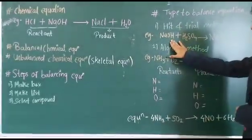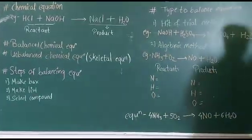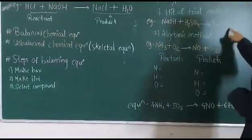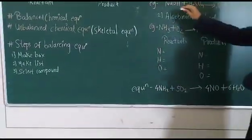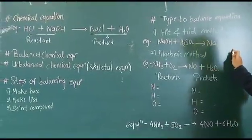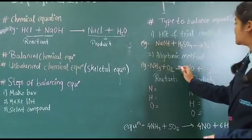First, hit and try method. In this, NaOH plus H2SO4 gives rise to Na2SO4 plus H2O. So we need to balance this equation. This is a skeletal equation, means unbalanced chemical equation.